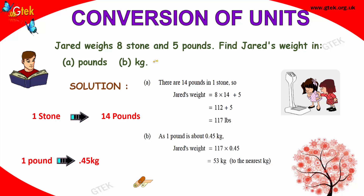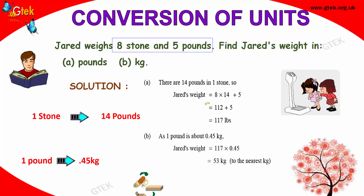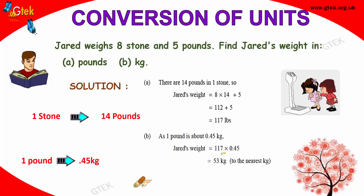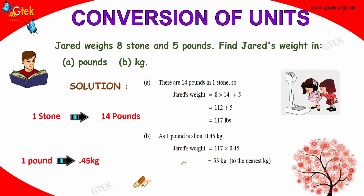I want to convert 8 stone and 5 pounds into kilograms. 1 pound is equal to 0.45 kilograms. So 117 pounds multiplied by 0.45, we get the weight as 53 kilograms. It's the nearest value.